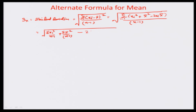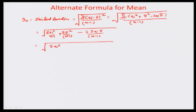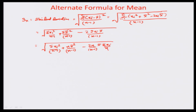Then we have twice sigma x_i x-bar by n minus 1. We can further simplify by substituting this as n x-bar squared, because you are repeating the x-bar squared exactly n times here, divided by n minus 1. Multiplying and dividing by n, we get x-bar times sigma x_i by n.